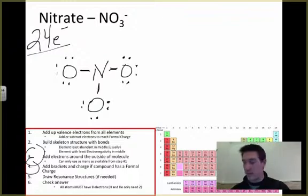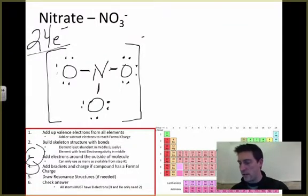I need to add brackets if that's necessary. So I come around here, it is necessary because I have an overall negative charge. I need to draw resonance structures. I don't know if I'm there yet. Let me check my answer first. I mean, we might be able to see that something's going on here, but let me just walk you through it.